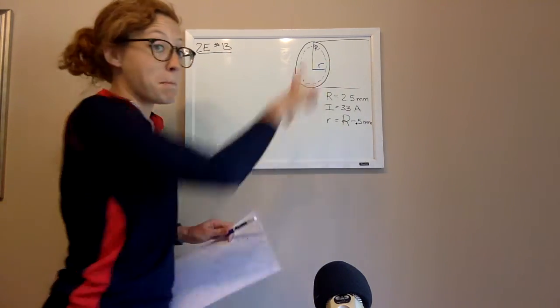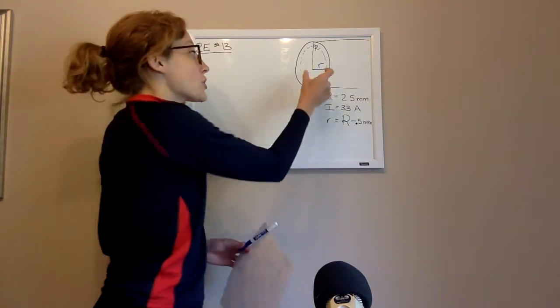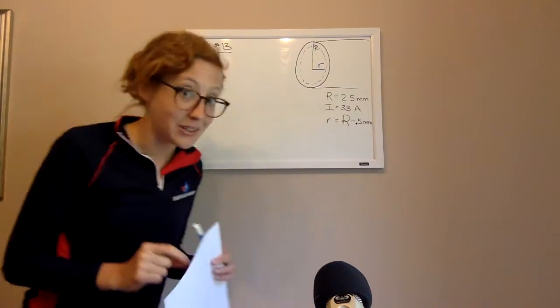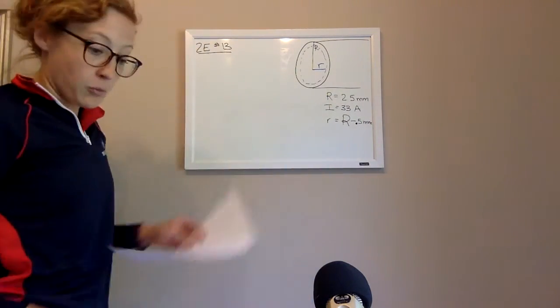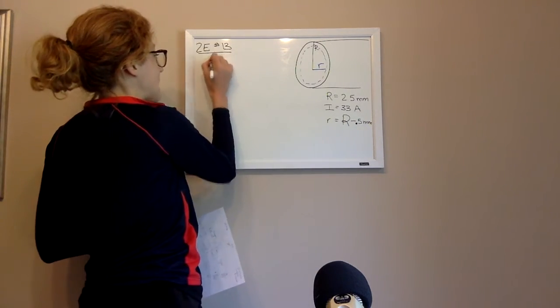So notice the difference here between big R, which is the total radius of the entire wire, versus little r, which is the radius of the circle that we're interested in looking at. So now, we can use Ampere's Law. So let's do that. So Ampere's Law, what does that say?